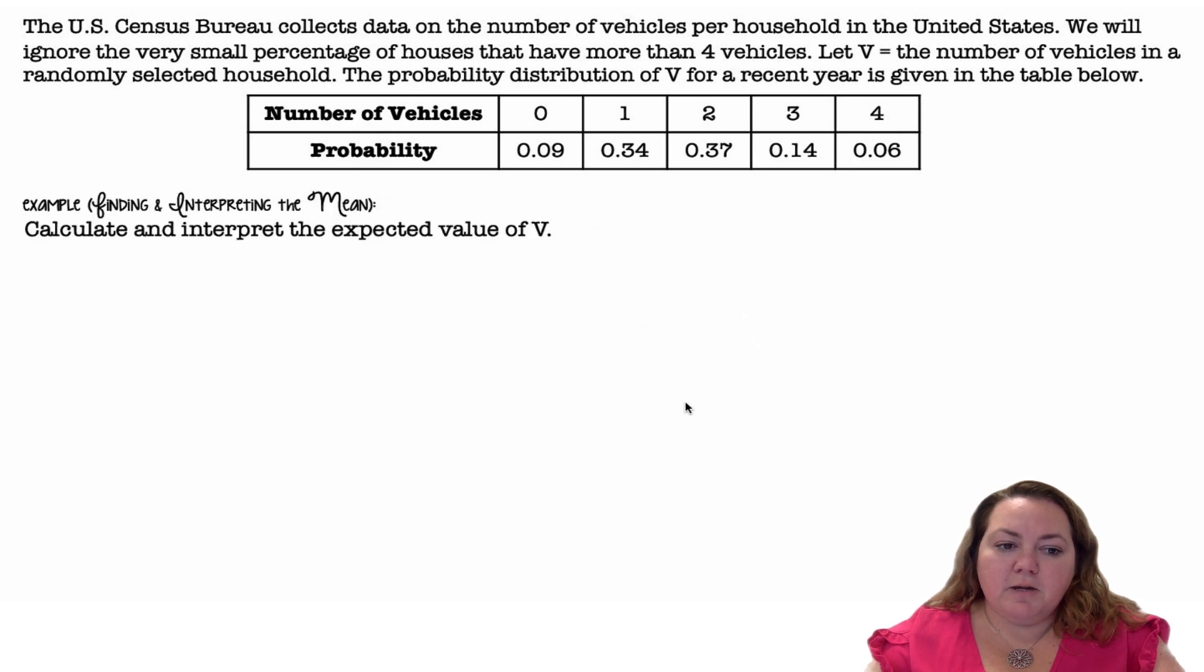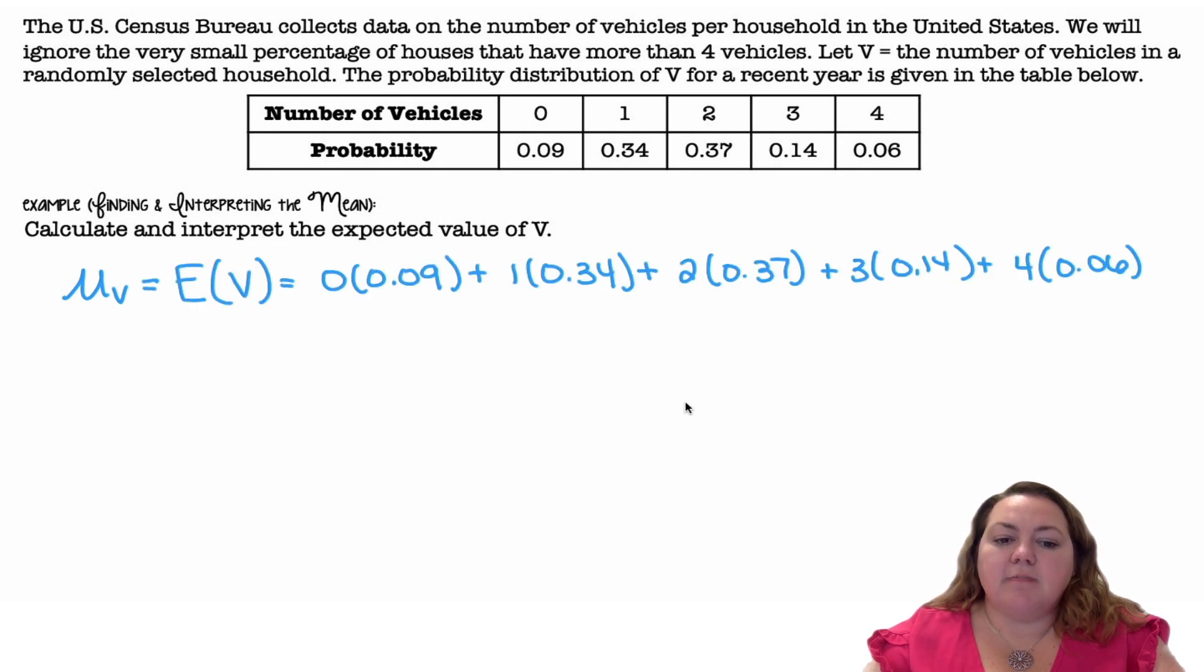Finding and interpreting the mean. Calculate and interpret the expected value. The expected value is the same as the mean. So we take each value times it by its probability, plus the next value times its probability, plus the next value times its probability, and so on, and we get 1.74.